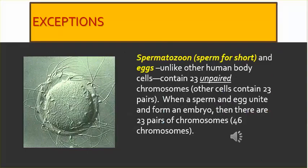Exceptions: Spermatozoan — sperm for short — and eggs, unlike other human body cells, contain 23 unpaired chromosomes. Other cells contain 23 pairs. When a sperm and egg unite and form an embryo, there are 23 pairs of chromosomes, or 46 individual chromosomes.